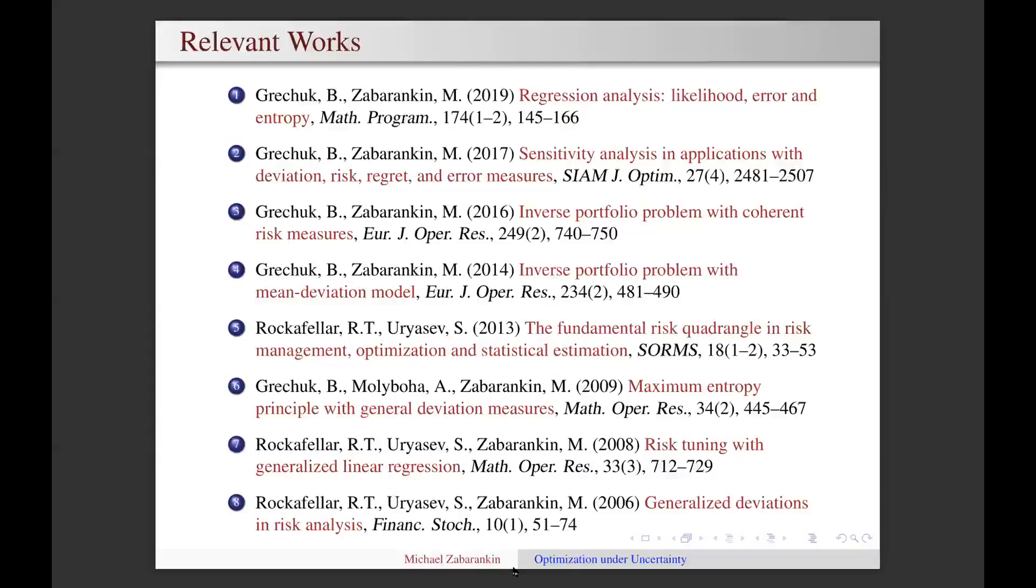Or we can even use it in online regime, when we can feed data gradually and develop an algorithm which would learn those preferences, and that deviation or risk measure or error measure in online regime. So that's exactly where data can help, either offline or online learning of those risk preferences. Okay, got it. Thanks very much.